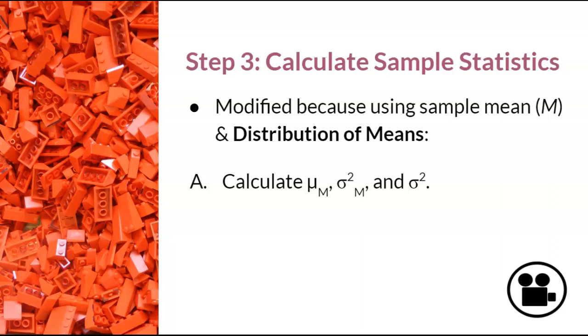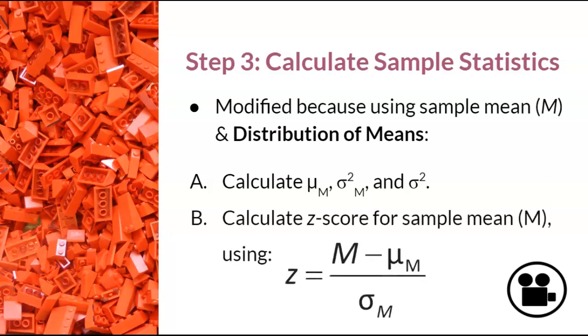After that, we can calculate the z-score for the sample mean with this new formula. Well, really this formula isn't that new. Notice that this is a modified version of the z-score formula from chapter 3 where x is now replaced with the sample mean, M is replaced with mu M or the population mean for a distribution of means, and SD at the bottom is replaced with sigma, which is standard error.